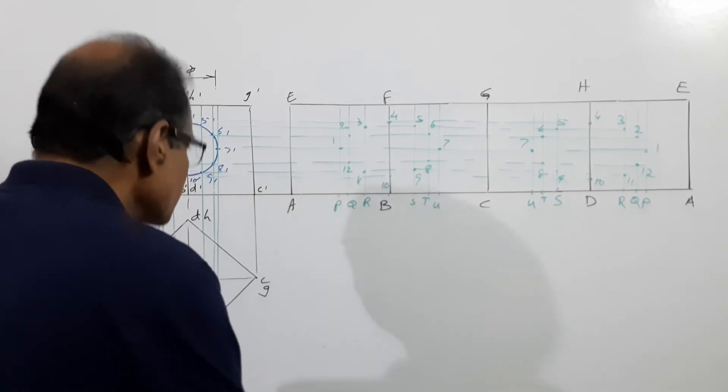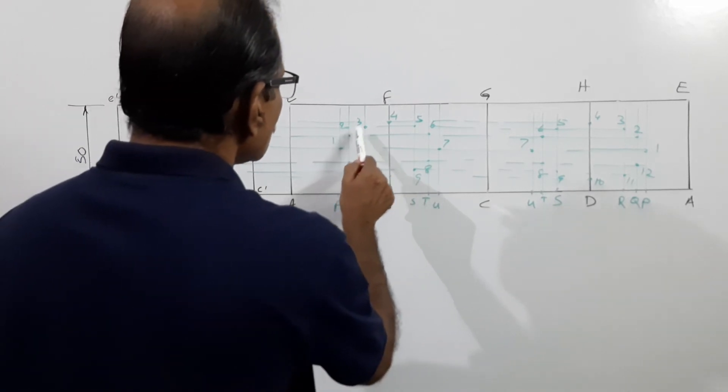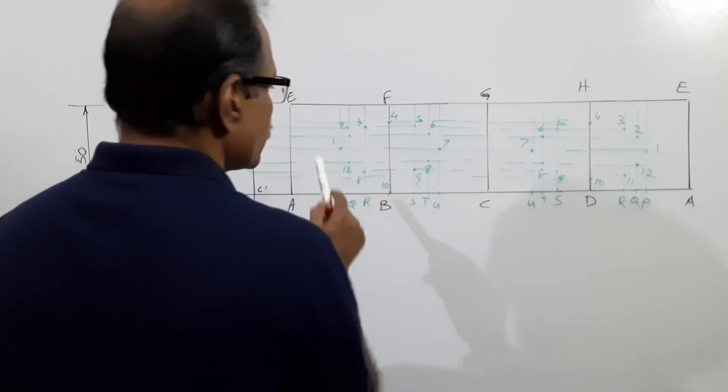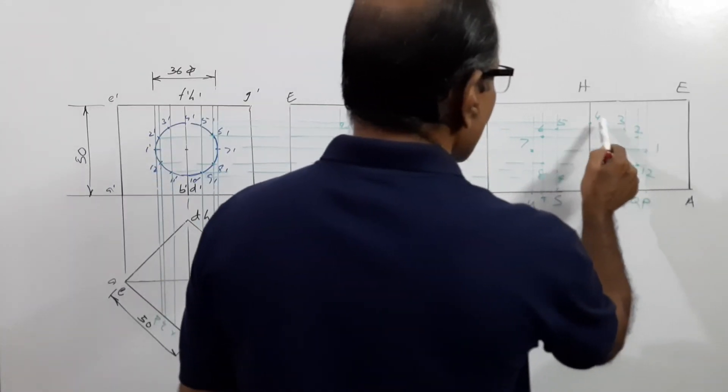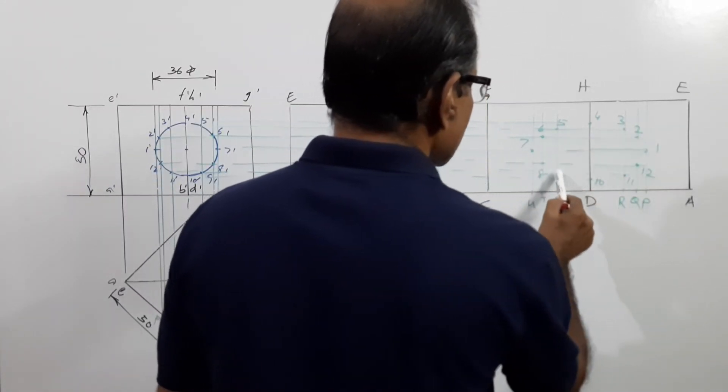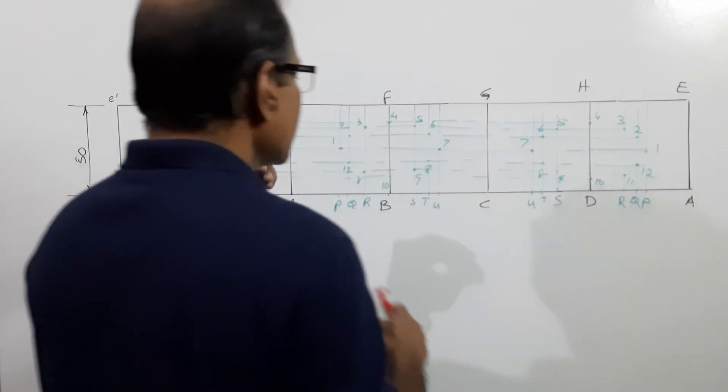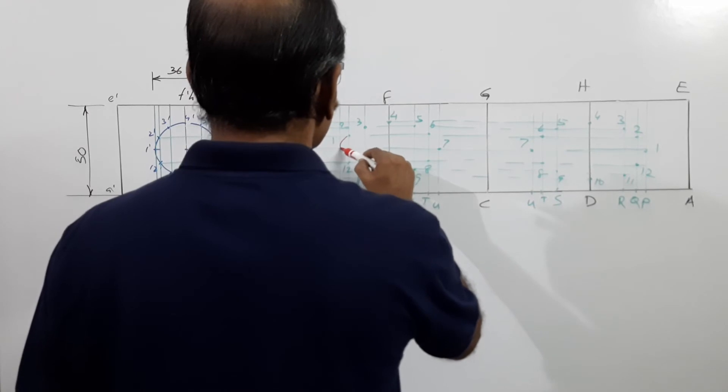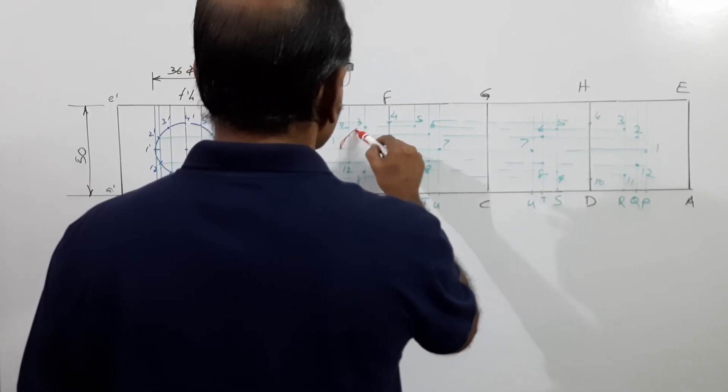Where are the points? You can see one, two, three, four, five, six, seven, eight, nine, ten, eleven, twelve. Connect them in order by a smooth curve.